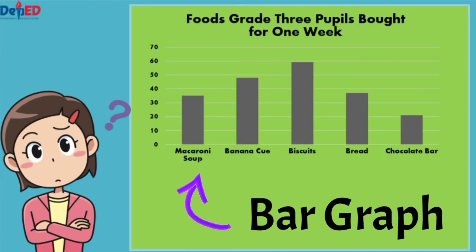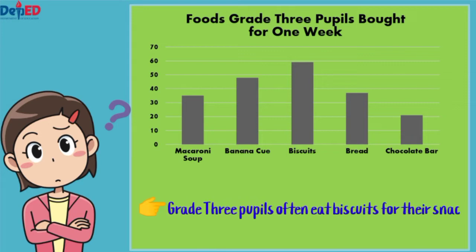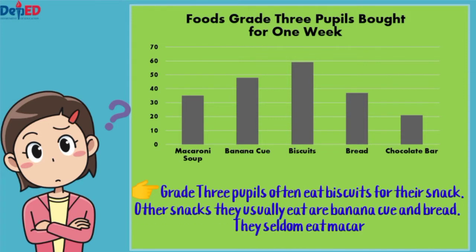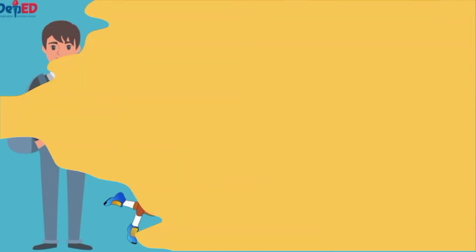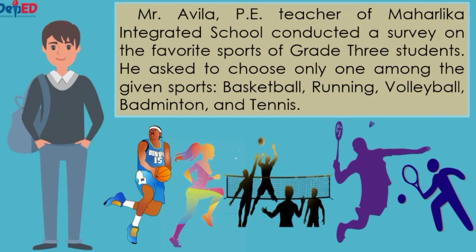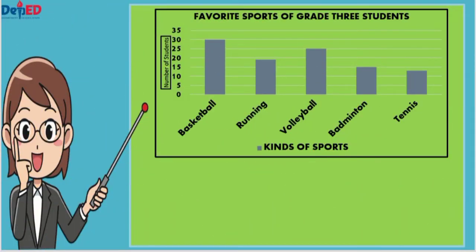The kid from the story also made a bar graph about their choices shown on the table. From this graph, it tells that Grade 3 pupils often eat biscuits for their snacks. Other snacks they usually eat are banana cubes and bread. They seldom eat macaroni soup and they rarely buy chocolate bars. Let us use another example to interpret a bar graph. Mr. Avila, PE teacher of Maharlika Integrated School, conducted a survey on the favorite sports of Grade 3 students. He asked them to choose only one among the given sports: basketball, running, volleyball, badminton, and tennis.